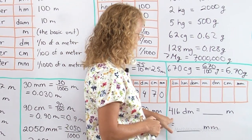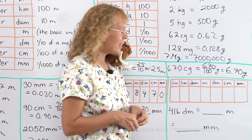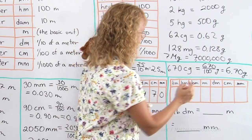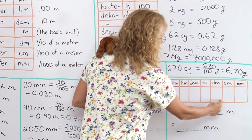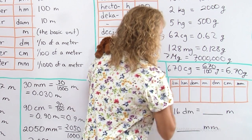Another example. I have 416 decimeters. So I have to find decimeters and imagine the decimal point is here, 416, like this.